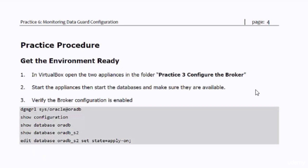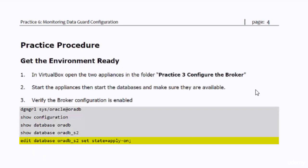As in the previous practice, I already opened the appliances, created two PuTTY sessions to connect to them, and started their databases. I will start the DGMGRL utility now, verify the broker is enabled, and start the apply process.